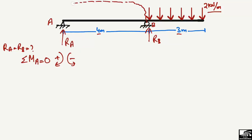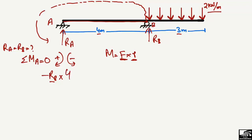The force R_B will create a moment about point A in the anti-clockwise direction, so it will be negative: minus R_B multiplied by its moment arm, which is the distance from the load up to the point where you want to find the moment. This distance is 4 meters. Now there is also a uniformly distributed load of 2 kN per meter which also creates a moment about point A. The distributed load is 2 kN/m, so 2 × 3 gives us 6 kN — we convert the uniformly distributed load into a concentrated point load.